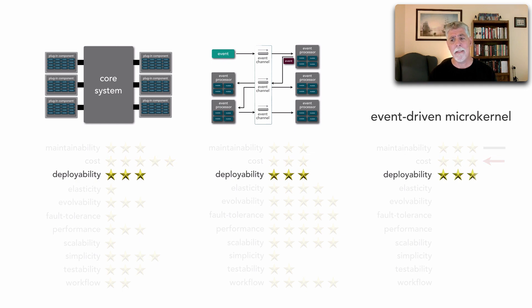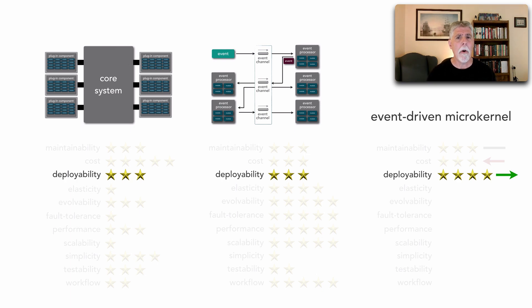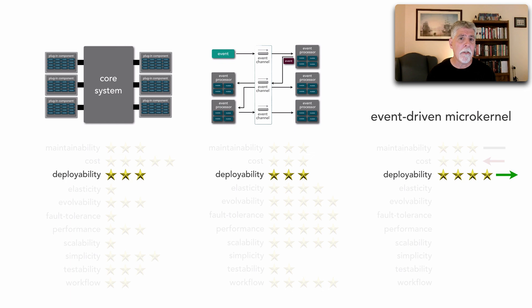From a deployability standpoint, we actually gain a star on microkernel. This is primarily because if we're changing a plugin component that's now separately deployed and accessed through messaging, we get better decoupling of these plugin components from the core system, and that allows just that one plugin component to have to be deployed. So we actually do gain a star from deployability.